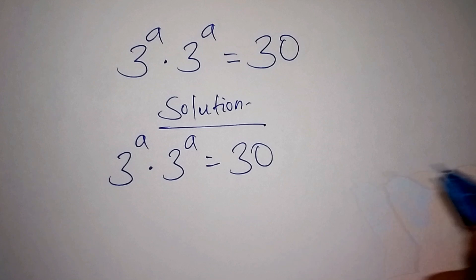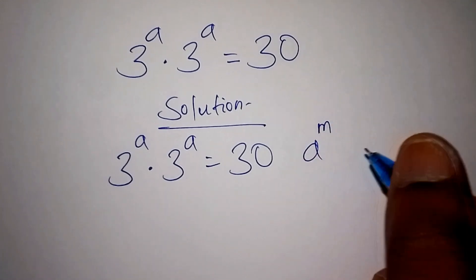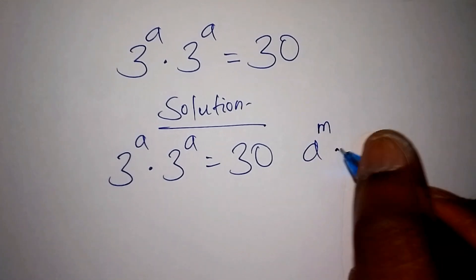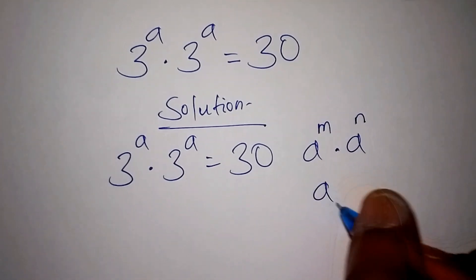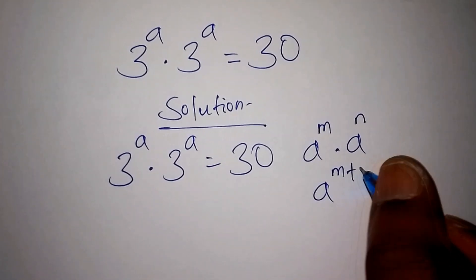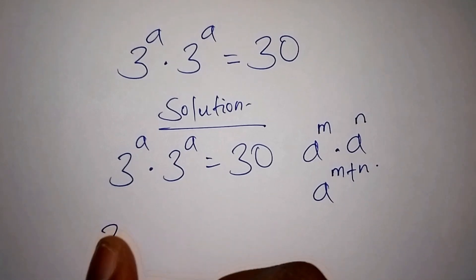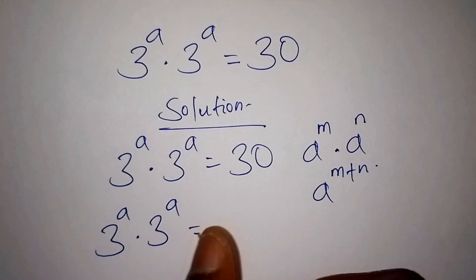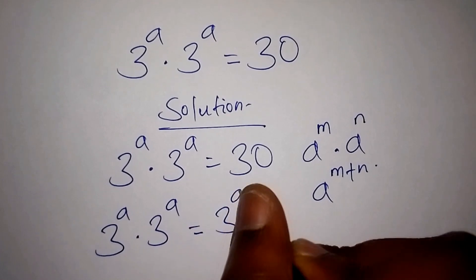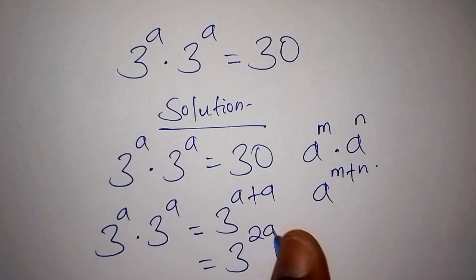The first thing to recall is that when you have A to the power of M multiplied by A to the power of N, this can also be written as A to the power of M plus N. So 3 to the power of A multiplied by 3 to the power of A can be written as 3 to the power of A plus A, which gives us 3 to the power of 2A.